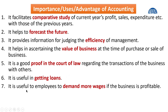The sixth advantage is that accounting information is useful in getting loans. For example, if Cardan University wants a loan from Aziz Bank, the bank will require accounting information to check whether the university can repay the loan and whether it has enough security — without this information, the bank will not provide any loan.